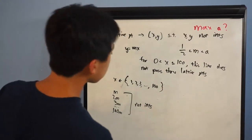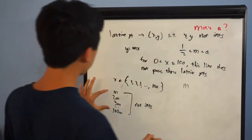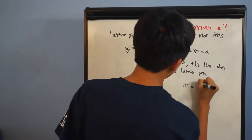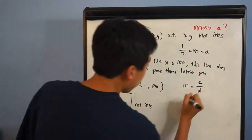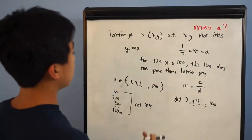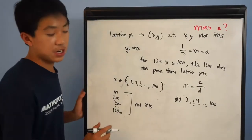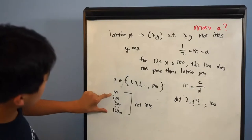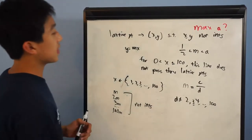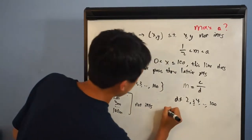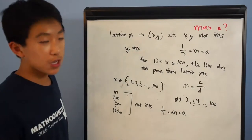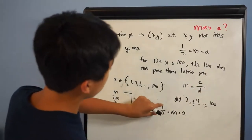Since m is not an integer, m must be a fraction — let's say m equals c over d. Then d cannot equal 2, 3, 4, all the way until 100. We don't include 1, because no proper fraction has denominator 1. But for denominators 2 through 100, if d equaled any of those values, then one of the expressions dm would be an integer, making our condition false.